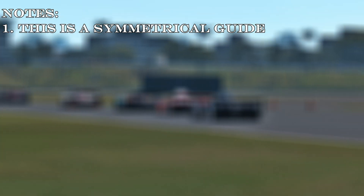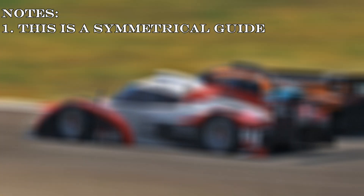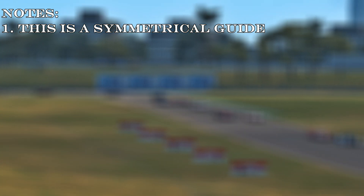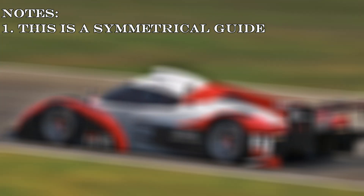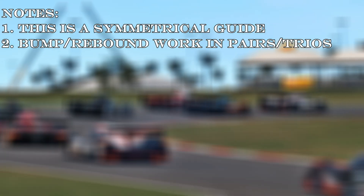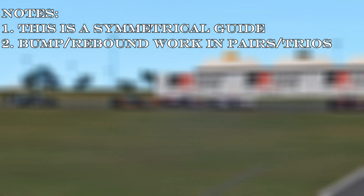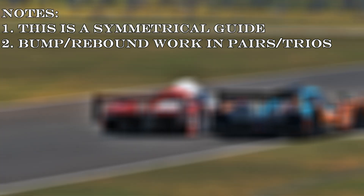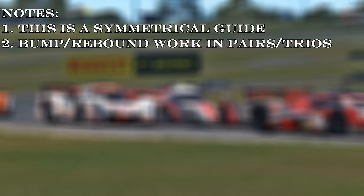Now for some very important notes and caveats. Everything described above is for a symmetrical build, and you'd be correct to notice that making symmetrical changes come with a benefit in one area and a negative in another — we are making trades. For example, if you increase the front rebound stiffness to help with corner entry, it might negatively impact corner exit. It's important to isolate the more pressing needs and try to find solutions in other areas when you can. Bump and rebound also work in pairs and trios, transferring and taking on more load when one or two tires are in the bump phase while others are in rebound.